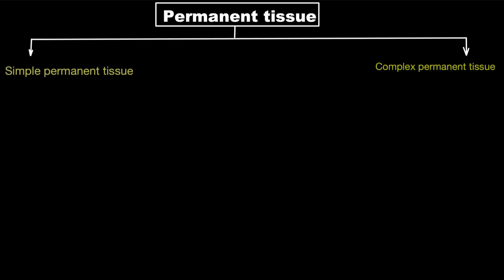In this video we will look into the details of permanent tissue. Permanent tissues are divided into two further types: simple permanent tissue and complex permanent tissue. Simple permanent tissues are made up of just one type of cells, while complex permanent tissues are made up of different types of cells which together perform one particular function.